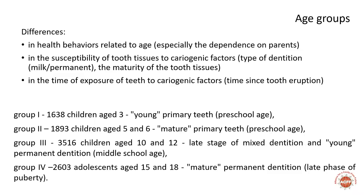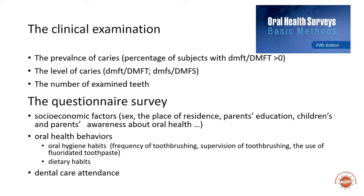As we know, there are many factors which influence caries prevalence and intensity depending on the age. In the evaluation of caries risk, we should take them into consideration. Because of this, we have differentiated four age groups for our analysis. For each group, we collected data from a clinical trial and a questionnaire. From the clinical trial, we have taken into account the prevalence of caries, the level of caries, and the number of examined teeth.